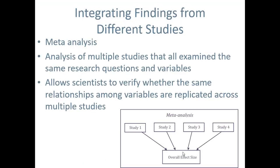One last type of research that is really important in developmental studies — and really in all studies — is what we call a meta-analysis. Sometimes there's this problem where one researcher did a study on, let's say, coffee, and found that coffee is bad for you. But then another researcher next year does a similar study and finds that coffee is good for you. And then another study finds that coffee doesn't have an effect on your health. And then another says coffee is good for you in certain situations. All of these studies say different things — what are you supposed to believe?